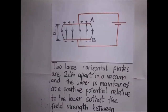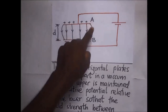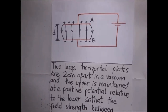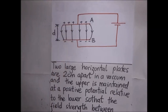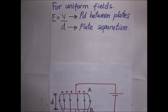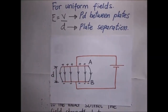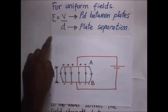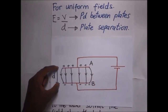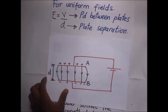We have two large horizontal plates — the upper plate is positively charged and the lower plate is negatively charged. From the relationship between electric field intensity and electric potential, the electric field intensity between the two plates equals the potential difference divided by the plate separation d: E = V/d. This is a uniform field, so the intensity between the plates is simply V over d. Let's look at a worked example.